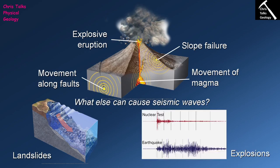The final cause of seismic waves is actually a human one — explosions, most accurately nuclear explosions. Looking at seismograms, the top one shows a nuclear test and the bottom shows an earthquake — the nuclear test produces seismic waves just like an earthquake. It's very common for governments to set up seismic stations to detect nuclear explosions. For example, if North Korea is testing a nuclear weapon, seismic stations in surrounding countries will try to detect the seismic waves produced by that nuclear explosion.